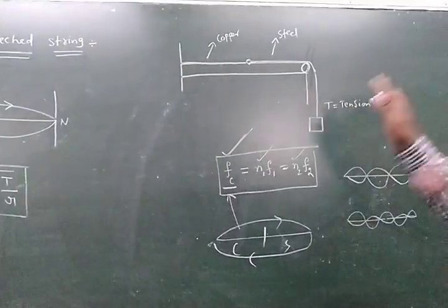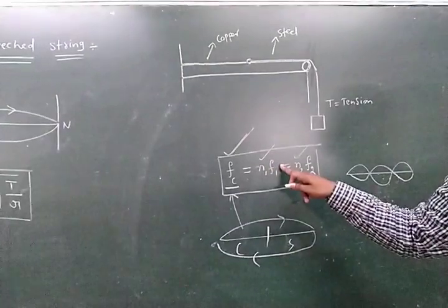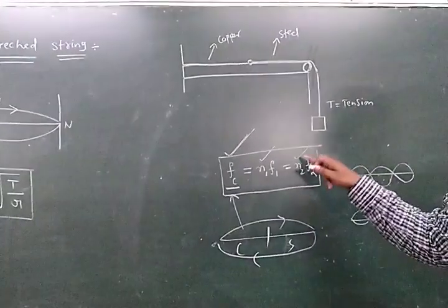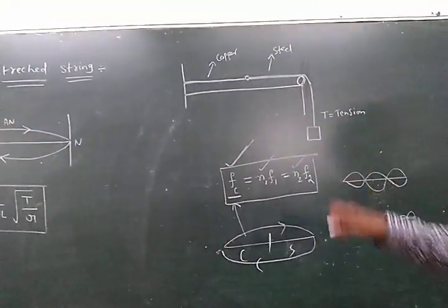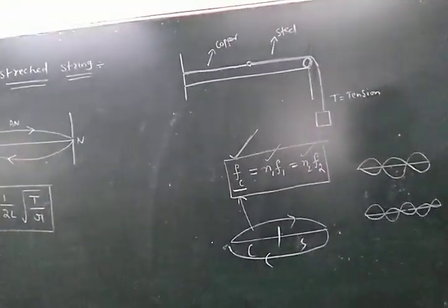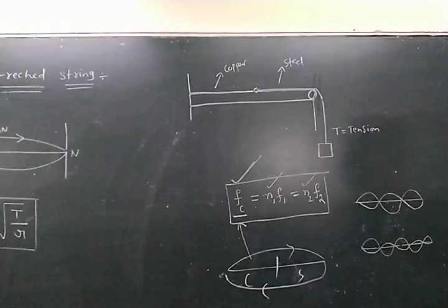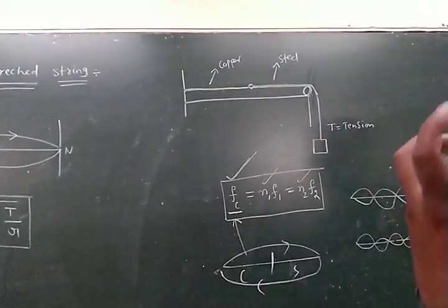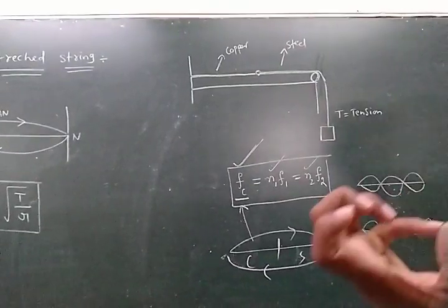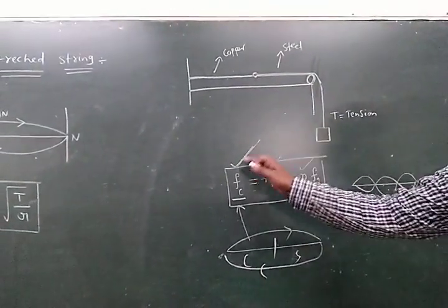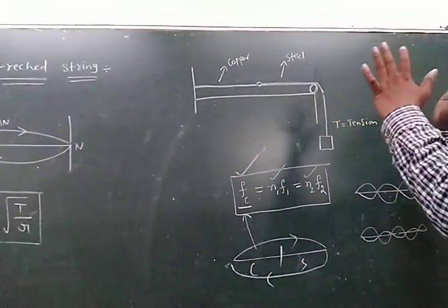The frequency of the composite wire equals N1 × F1, which equals N2 × F2. N1 indicates the number of loops in the first wire. F1 indicates the fundamental frequency of the first wire. N2 indicates the number of loops in the second wire. F2 indicates the fundamental frequency of the second wire. Use this formula to solve problems of composite wire.